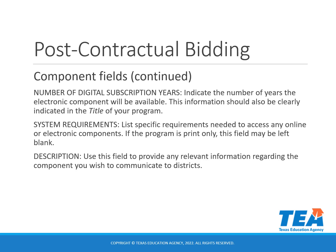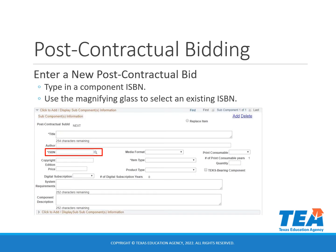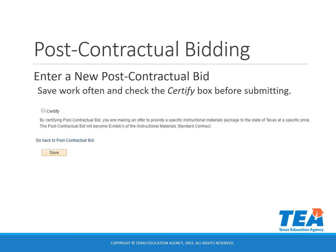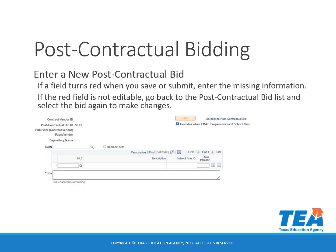In the description field, you will provide any relevant information regarding the component that you wish to communicate to districts. You will type in the ISBN of the new component into the component ISBN field; you may also use the magnifying glass to select an existing component ISBN. You will use the arrow at the bottom of the component section to view and add subcomponents. You will want to save your work often and check the certify box before submitting. If a field turns red when you save or submit, enter the missing information. If the red field is not editable, go back to the post-contractual bid list and select the bid again to make the changes.